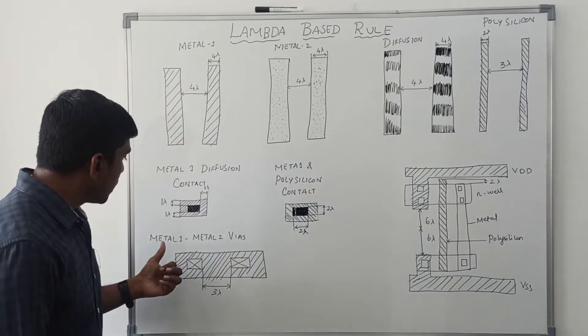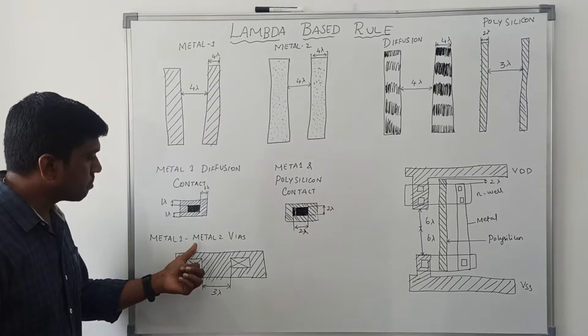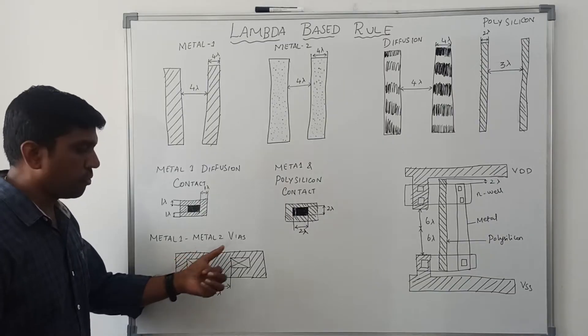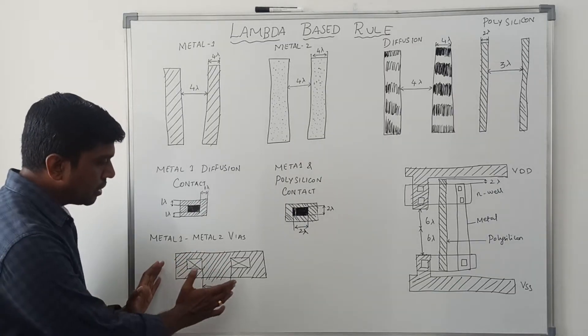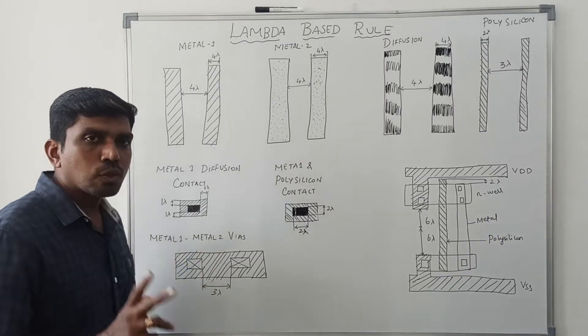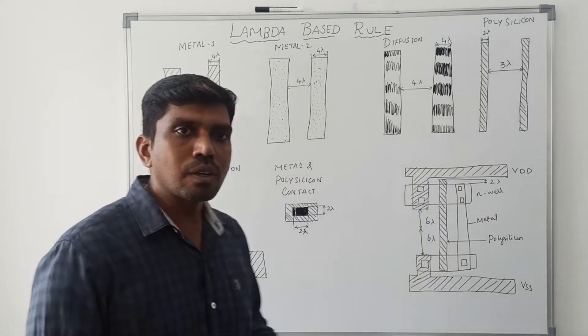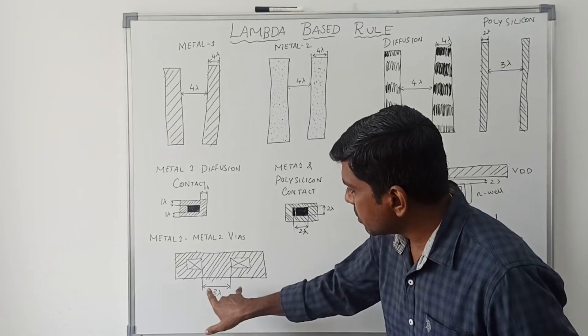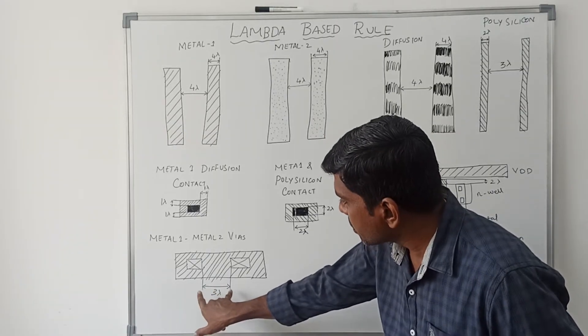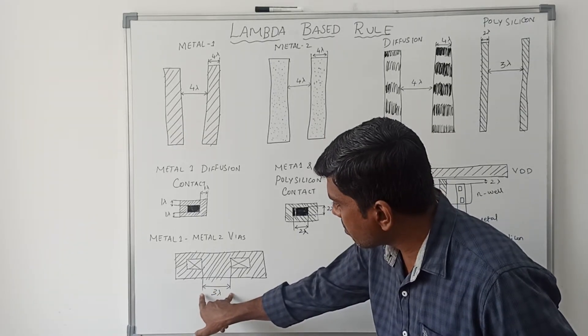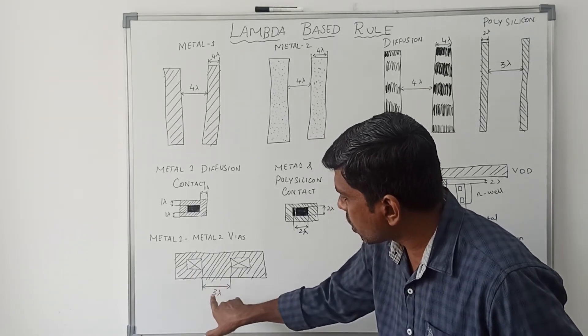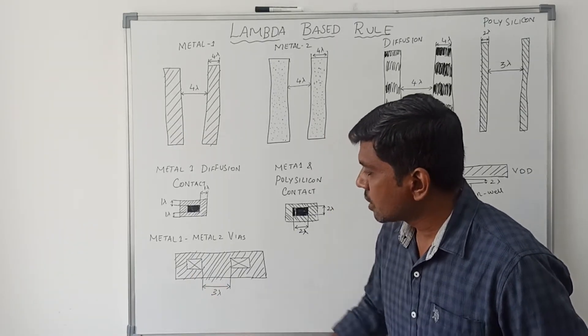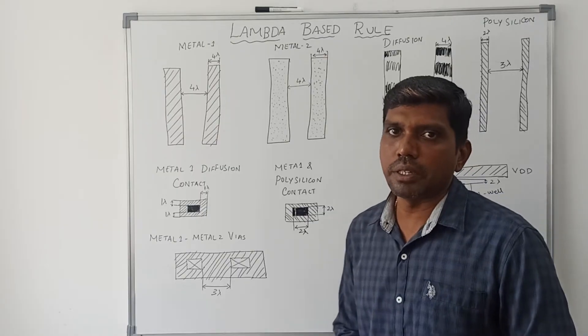For metal 1 to metal 2 via connections, two metals are connected through a via. The minimum spacing between these two contacts is 3 lambda.